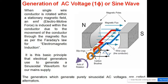The EMF is induced within the conductor due to the motion of the conductor in the magnetic flux. This is the basic principle that an electrical generator uses to generate the sinusoidal waveform for our main supply. In any type of generator, magnets are placed and a coil rotates in a stationary magnetic field, producing an induced EMF in the conductor.